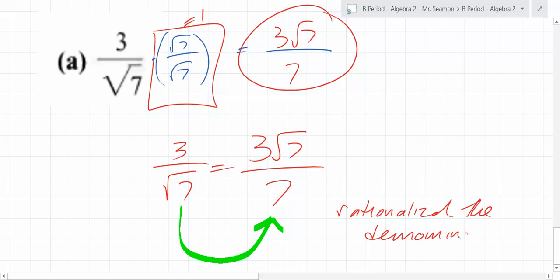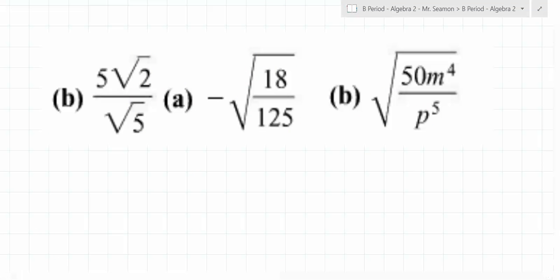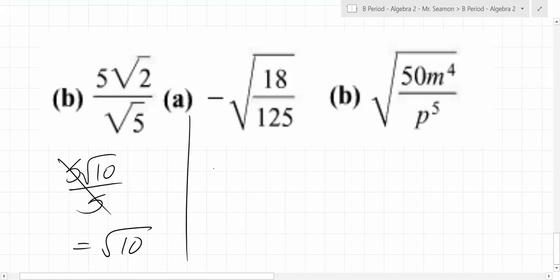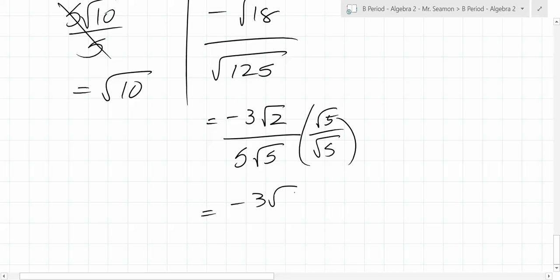With 5 root 10 over 5 cancels you're left with root 10. The next one, it's negative this. What is root 18? What does that turn into? 9 and 2. So it's negative 3 root 2 over, what is the largest square factor of 125? 25. So it's going to be 5 root 5. What do you have to multiply by? Root 5 over root 5. So you end up with negative 3 root 10 over 25. There it is.